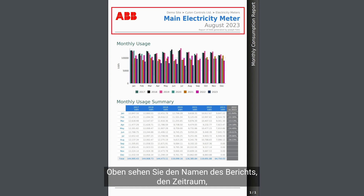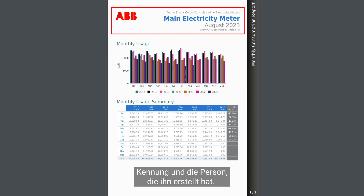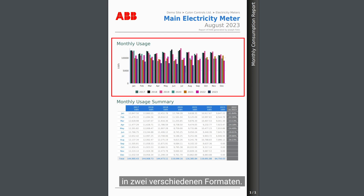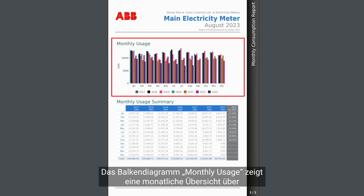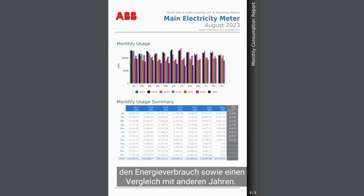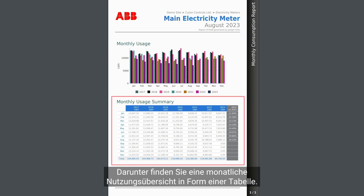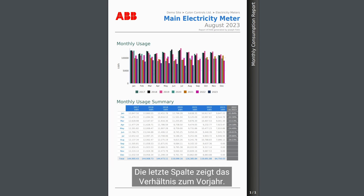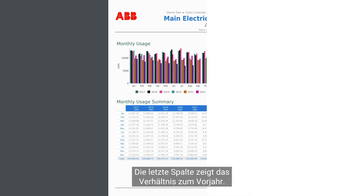At the top, you've got the name of the report, the period for which it was generated, and other details like the unique ID and the person who generated it. Below, you've got a summary in two different forms. The monthly usage bar chart shows a month-by-month view of energy consumption and the comparison with other years. Below it, you will find a monthly usage summary in the form of a table. It offers a deep dive into the numbers of every month, and the last column shows the delta with the previous year.